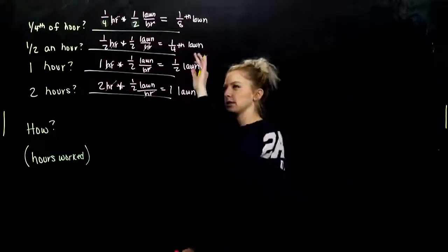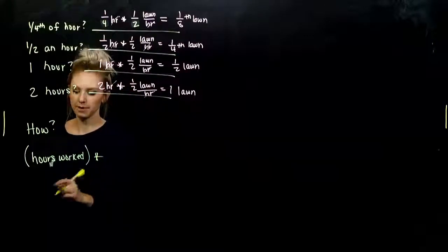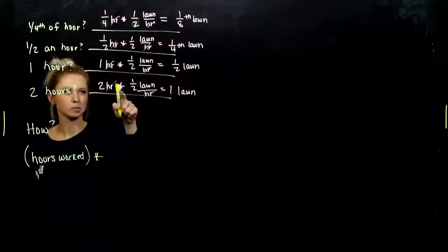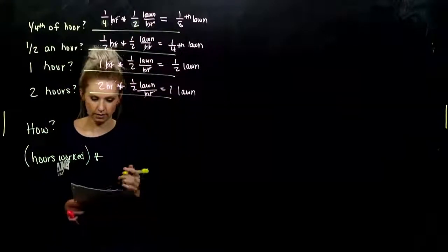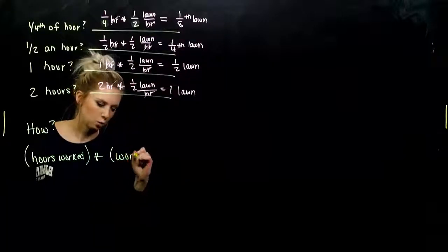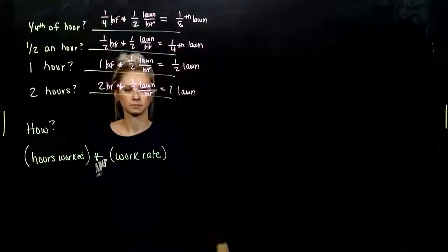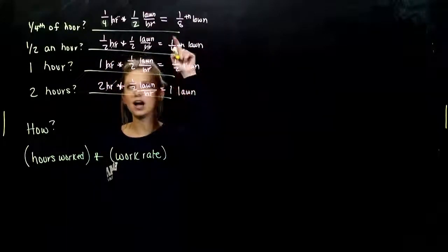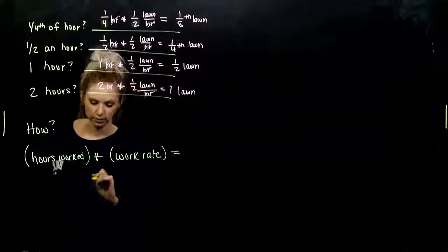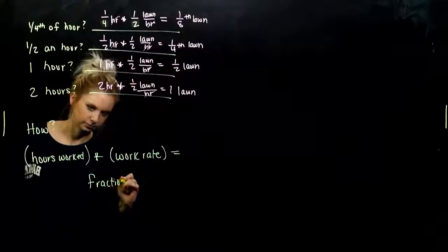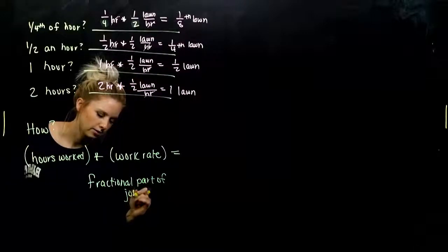Okay, so now everything lines up. Half a lawn in an hour is what we're multiplying by. The hours that I've worked, I multiply that by what? My rate. How much can I actually complete then? My work rate. And what came out in the end? Either I did the entire job, half of the job, a fourth of the job, or an eighth of the job. So we get out the fractional part of the job done.